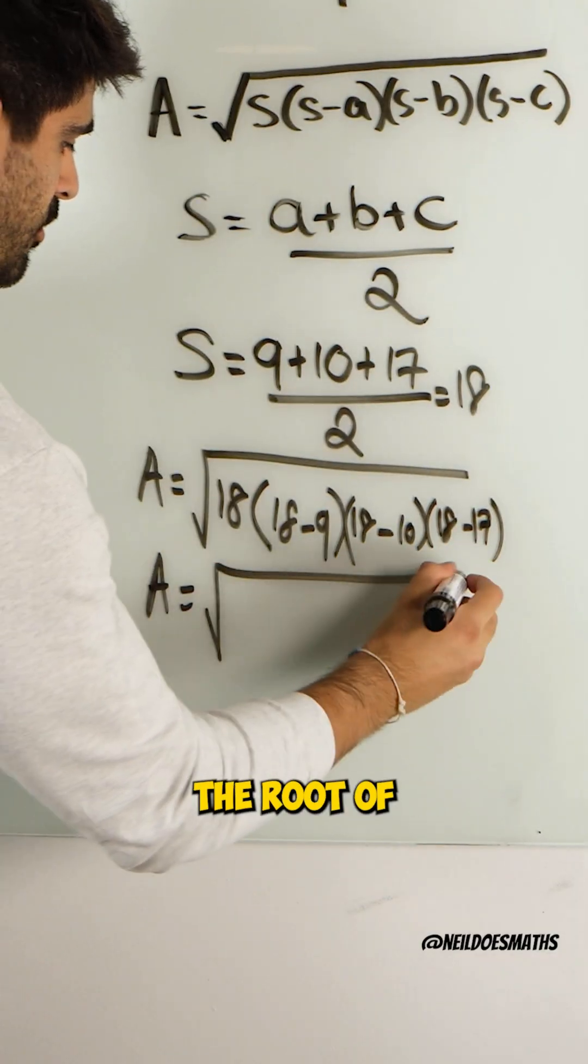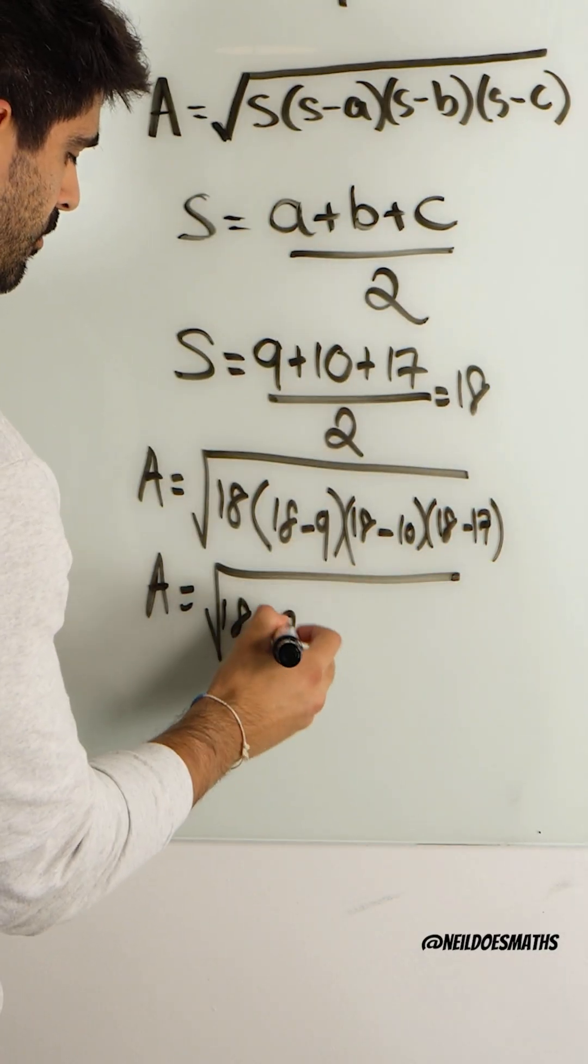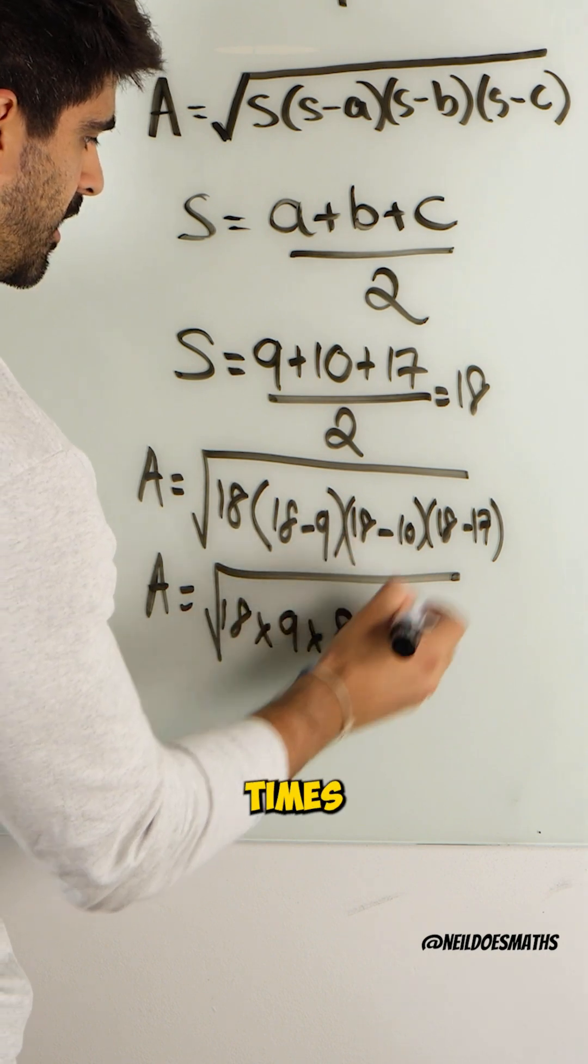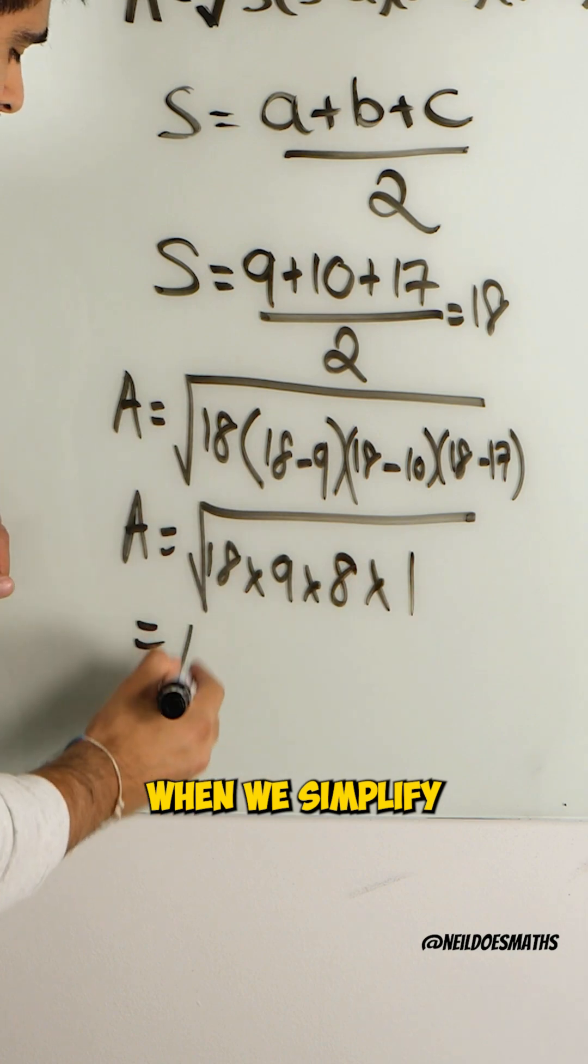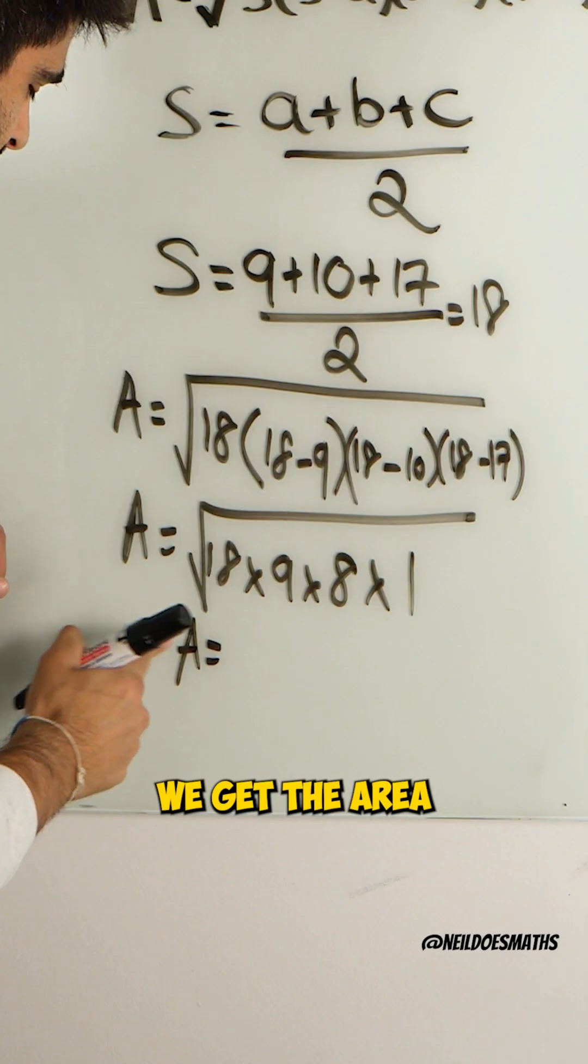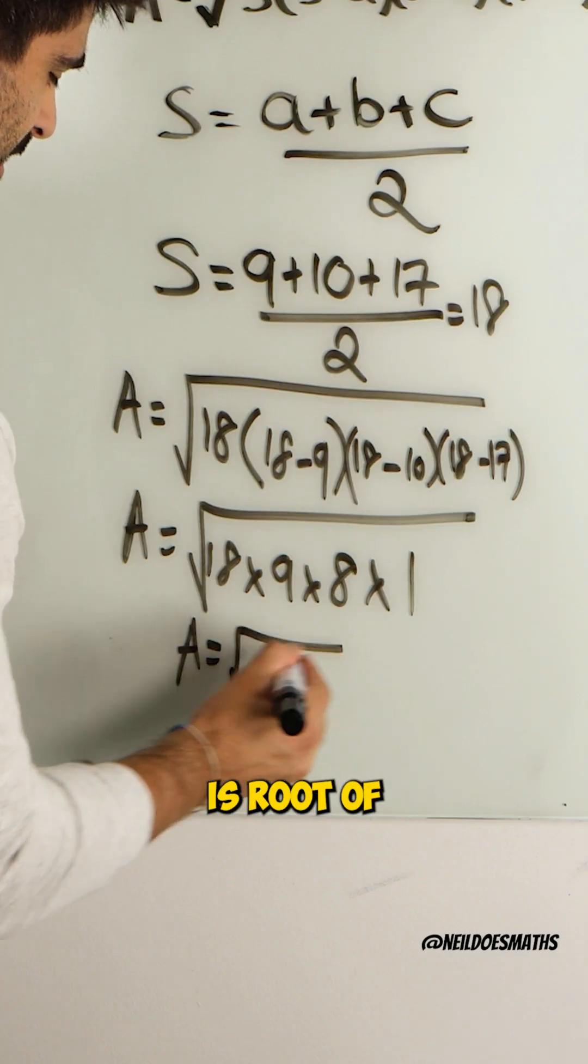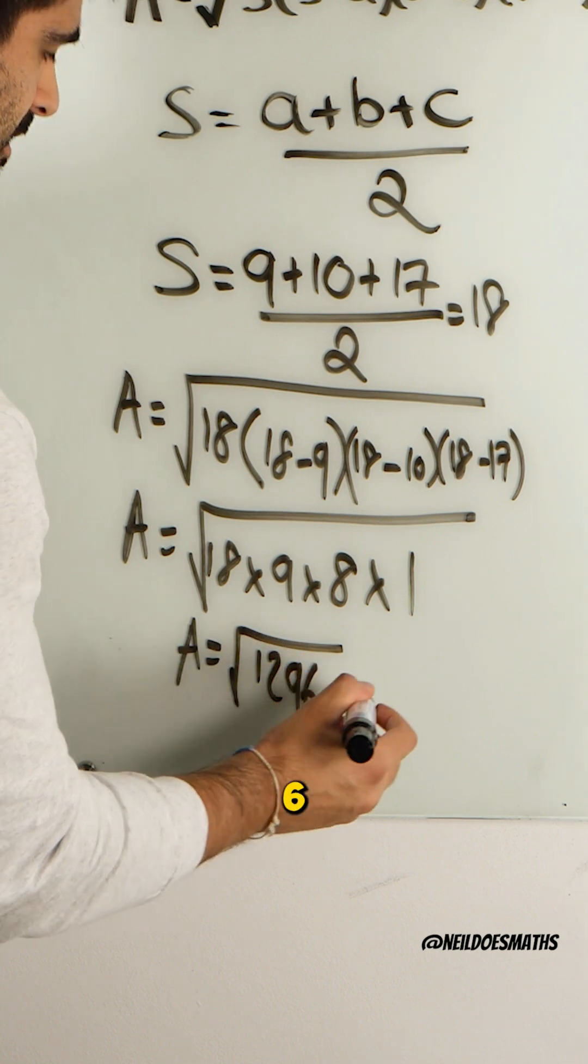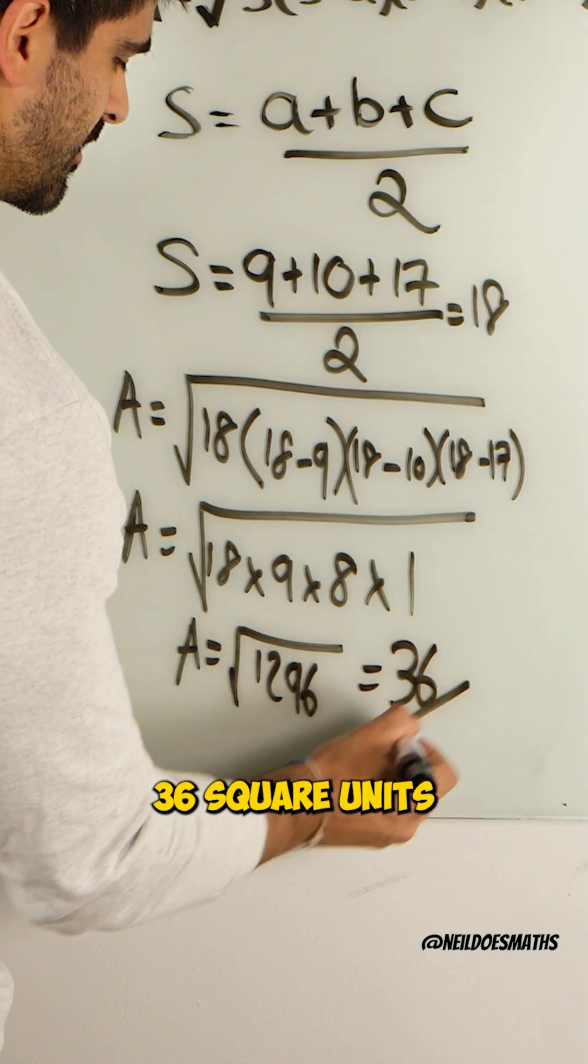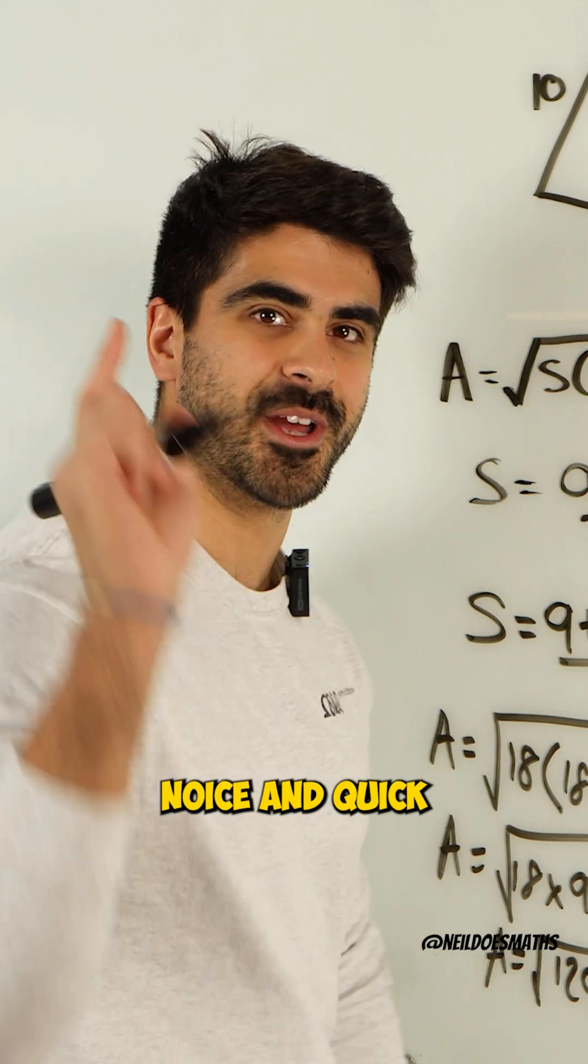When we compute this, we get the root of 18 times 9 times 8 times 1, which when we simplify, we get, wait, what? We get the area is root of 1296, which is 36 square units. Nice and quick.